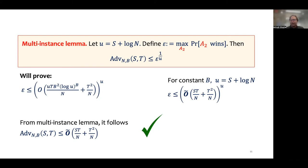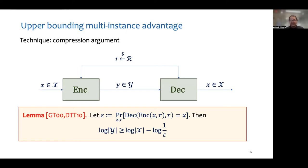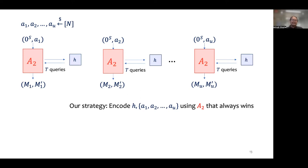So we need to upper bound the maximum advantage of the adversary against the multi-instance game, and we shall do this using a compression argument. The main idea behind a compression argument, formalized in the lemma here, is that it is impossible to compress a random element in a set X to a string shorter than log |X| bits, even relative to a random string. Our strategy will be to come up with an encoding and decoding procedure for the random oracle h and the random salts A1 through Au using this adversary, such that the decoding procedure is correct whenever the adversary wins.